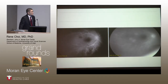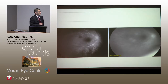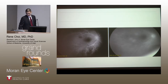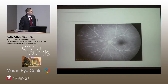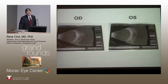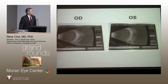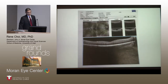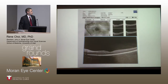On fluorescein angiogram, we see some late disc leakage as well as staining of those multifocal choroidal lesions in the right eye, as well as in the left eye. On ultrasound, there is some fluid in the suprachoroidal space in both eyes. And on OCT, you can appreciate some subretinal fluid in the right eye and none in the left eye.